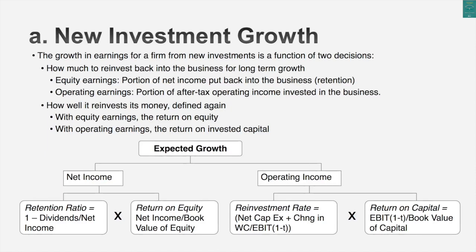When I'm looking at operating income, I'm going to vary those measures slightly. Instead of looking at the percentage of net income that I reinvest, I'm going to look at the percentage of after-tax operating income that I put back into the business in net capex and change in working capital. Net capex here includes acquisitions, it includes R&D. Looking at that percentage tells me how much of the after-tax operating income goes back into the business. So let's say it's 70% — for every $100 in after-tax operating income, $70 goes back into net capex and change in working capital. To see how well you reinvest, I'm going to look at the return on capital.